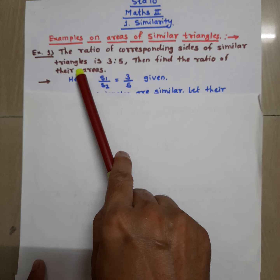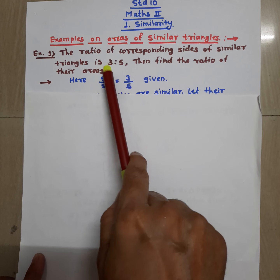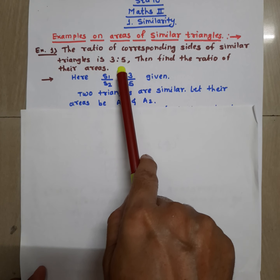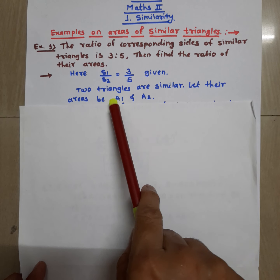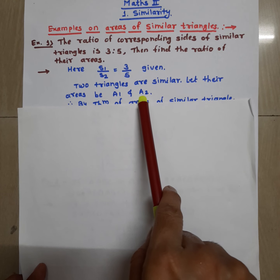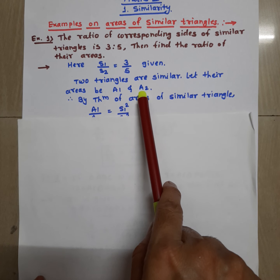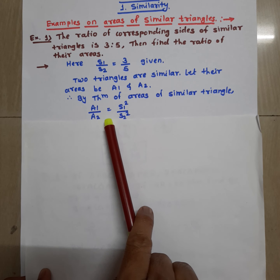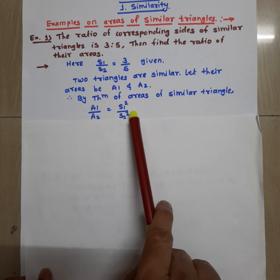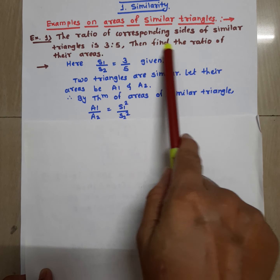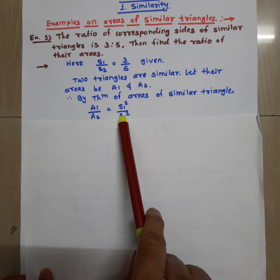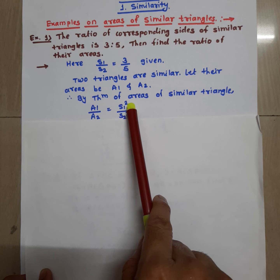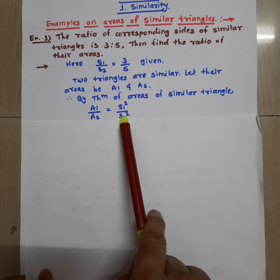The triangles are similar, and you know the property of the ratio of areas of similar triangles. The theorem states that if two triangles are similar, then letting their areas be A1 and A2, by this theorem we write in general form: A1 upon A2 is equal to S1 square upon S2 square.